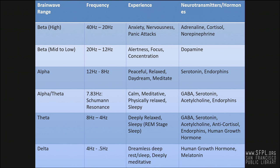There are hundreds of neurohormones, neuropeptides, and neuromodulators, but a few among them are the most important and well-studied. These include dopamine, serotonin, acetylcholine, gamma-aminobutyric acid (GABA), and glutamate.